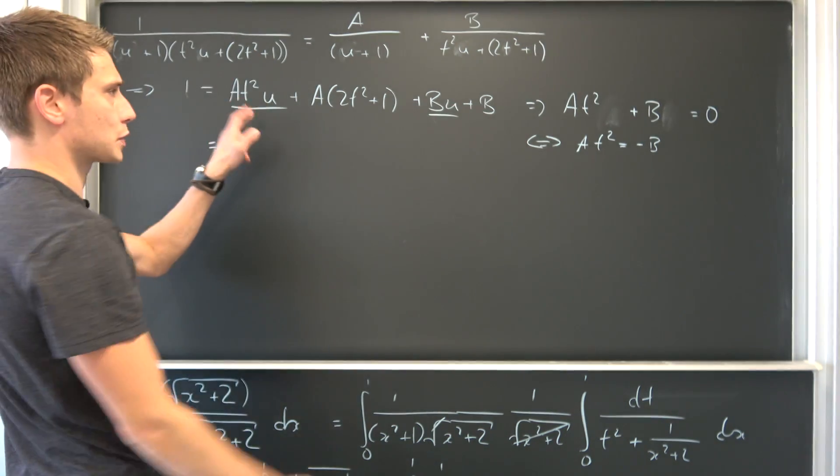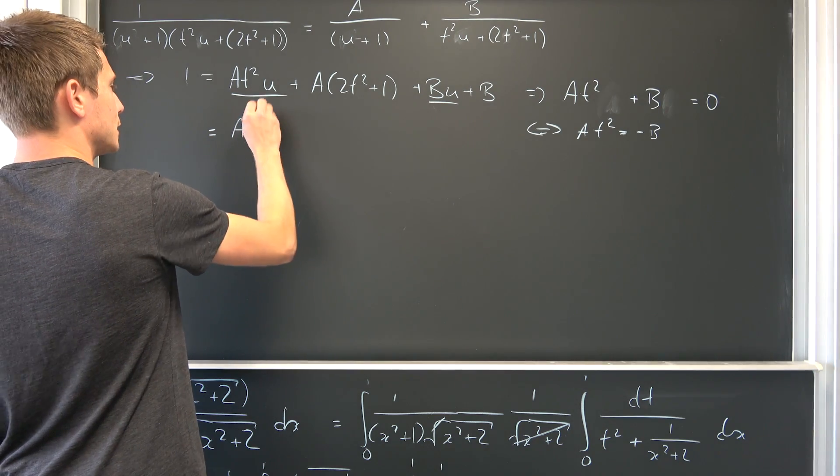We can place our restrictions in here. So that means we have A times 2 times t squared plus 1, and B is nothing but negative this chunk, negative A times t squared.